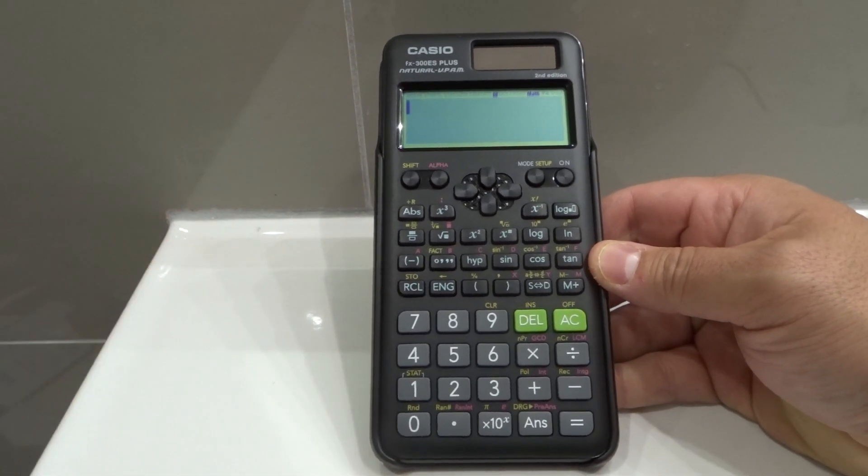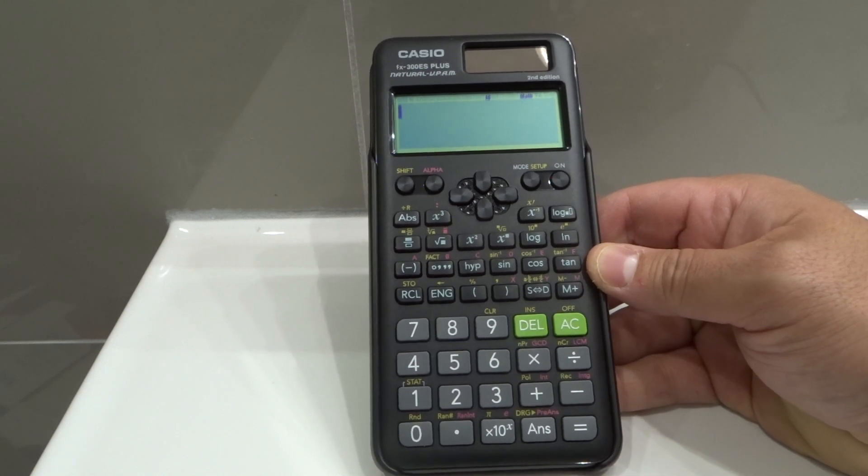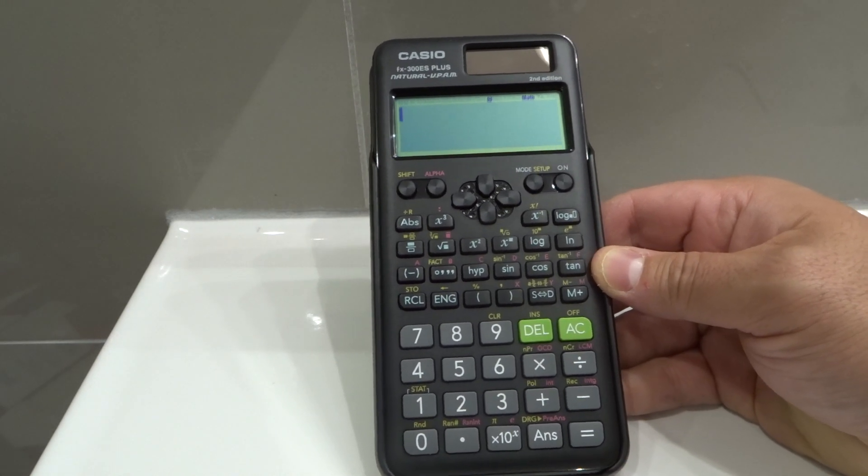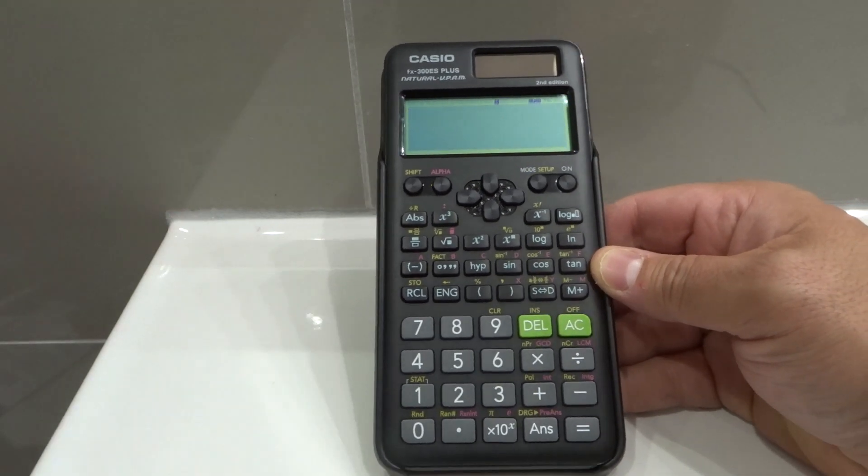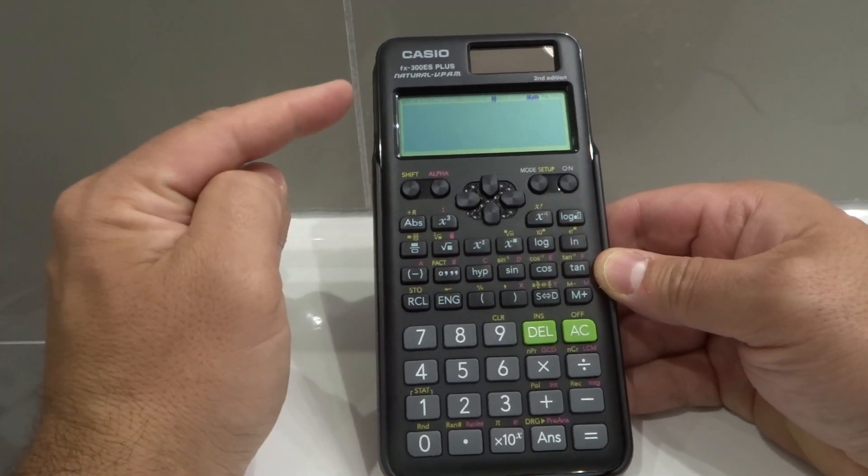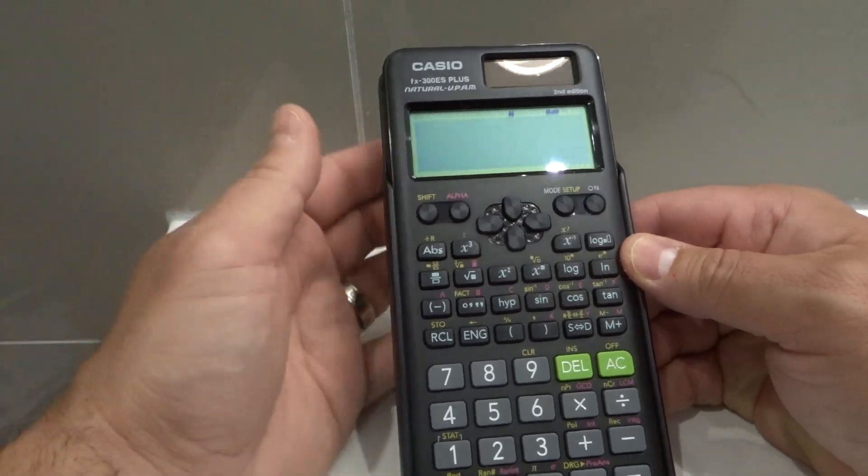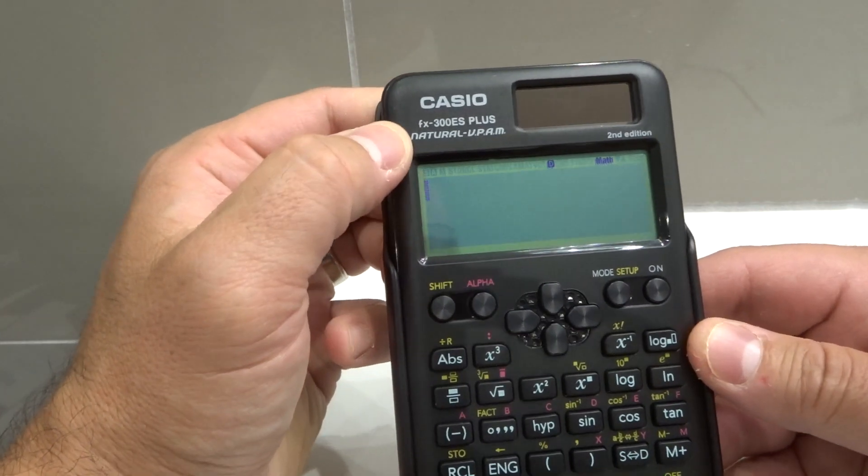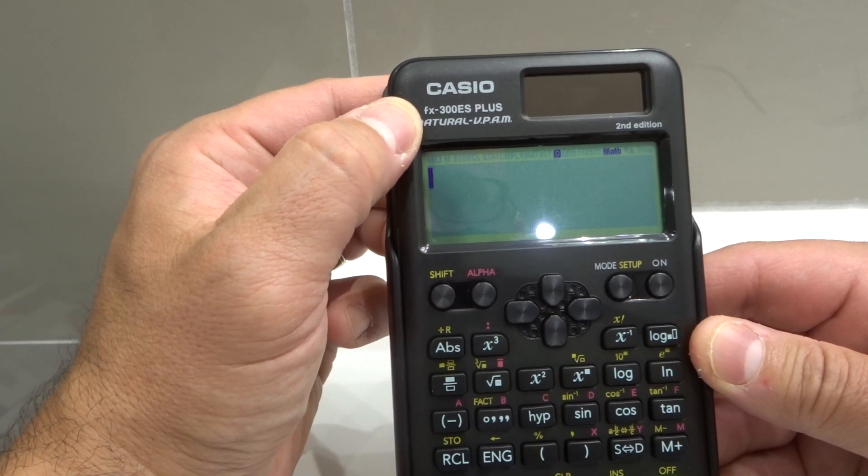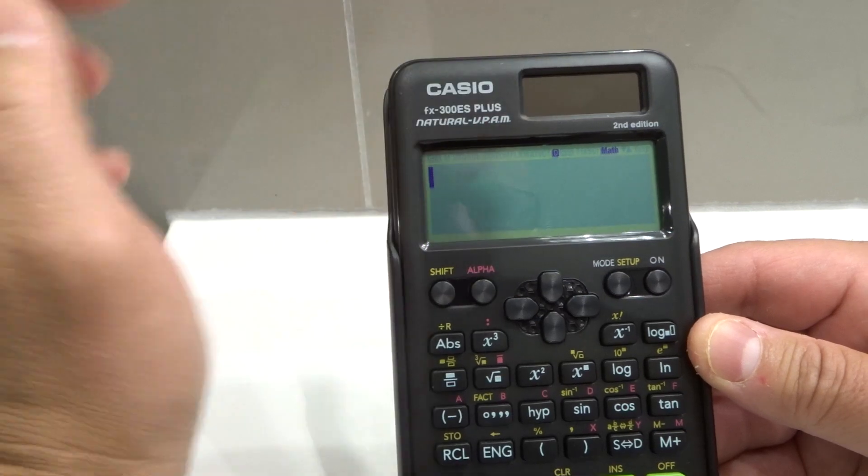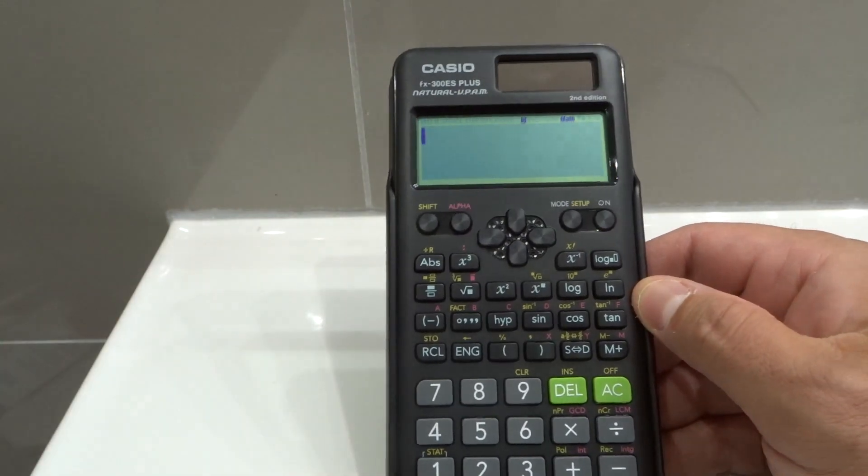This is the Casio FX-300ES Plus scientific calculator, and in this video review I'll be going over the features and functions of this awesome calculator. Now this is the second edition and I was reading off of the box to the side with regards to the model number, but it says it right here. It is once again the Casio FX-300ES Plus second edition scientific calculator, and in this review I'll just go over what I think about it.